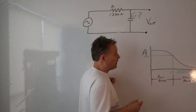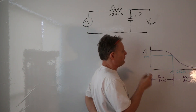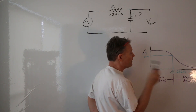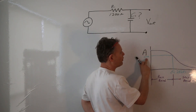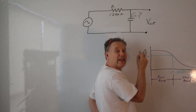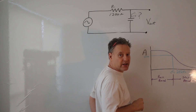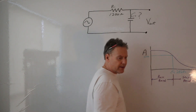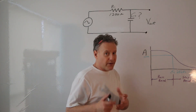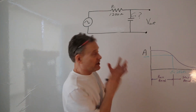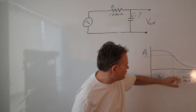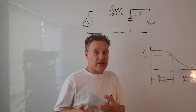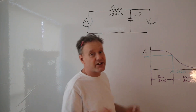Looking at our Bode plot, we can see that for a low-pass filter the Bode plot looks like this, and we know that our corner frequency is at the point where our gain is 0.707. We go over and down, and that's where our corner frequency is. For this specific circuit, the corner frequency is 228 Hz — the ones in your assignment are a little different, as are the resistors.